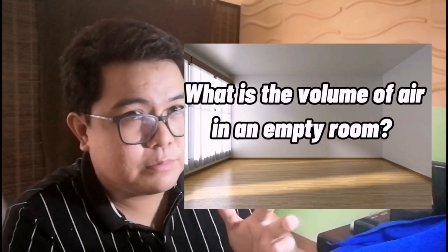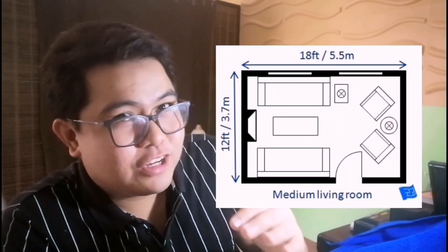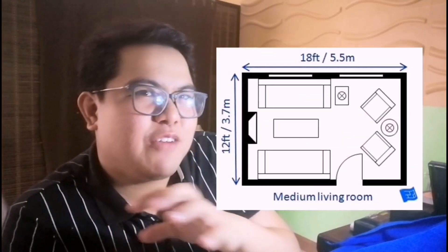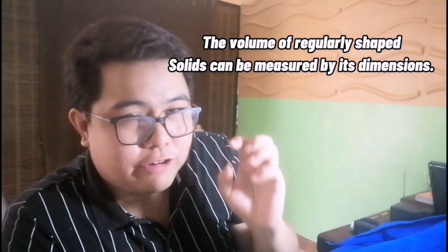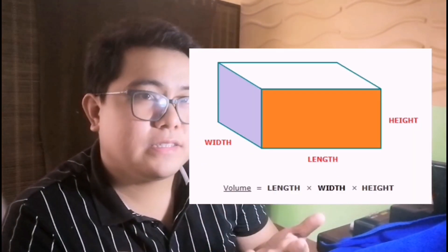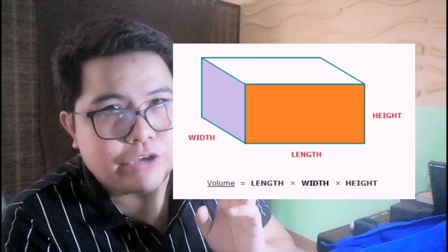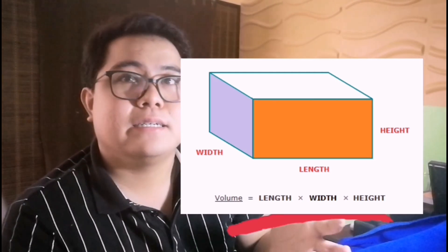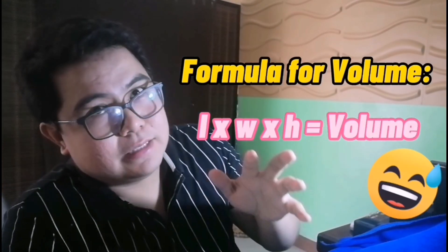Now, how could you find the volume of air in an empty room? To answer this, we have to get the dimensions of the room through getting the volume of solids. The volume of regularly shaped solids can be calculated from their dimensions. For example, the volume of a rectangular solid is equal to the product of its length, width, and height — L times W times H equals its volume. That will be the formula that we are going to use.